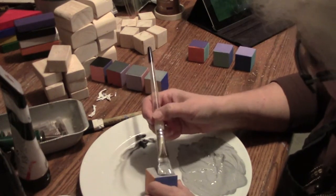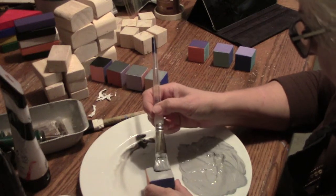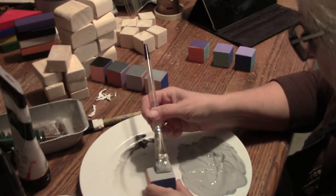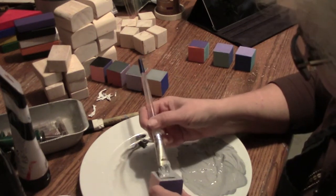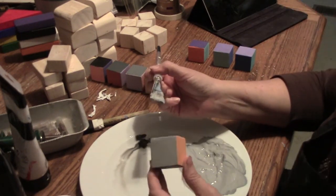I use a flat brush starting with one color straight from the tube. That will be the darkest value. In this example I'm using the color black. I paint one side of one block.